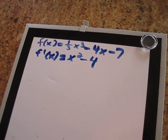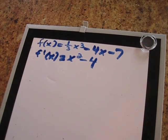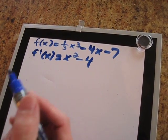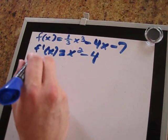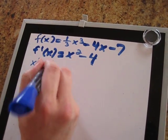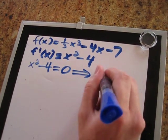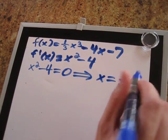And then we need to find where the derivative is either 0 or undefined. This is never undefined, so we can just set it equal to 0. And then we solve for x, and in this case, x equals plus or minus 2.